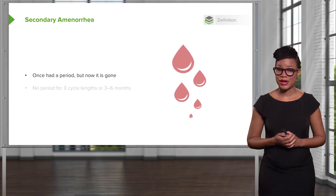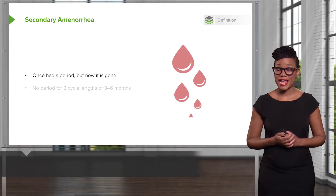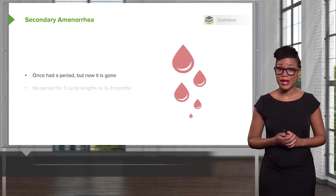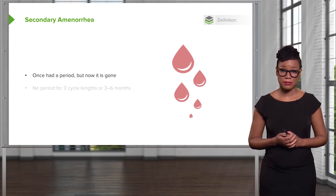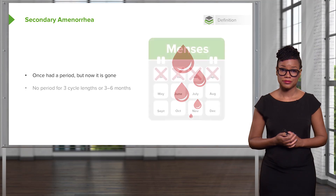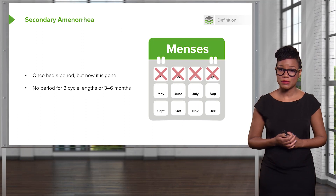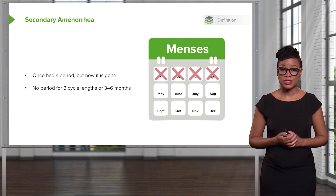Let's now talk about secondary amenorrhea. You've had a period once, but now it's gone — that's secondary amenorrhea, as opposed to primary amenorrhea, which means you never had a menstrual cycle. Secondary amenorrhea is defined as no period for three cycle lengths or for three to six months. That's atypical — something has gone wrong, and now it's our job to find out what.